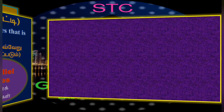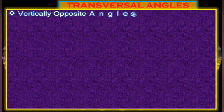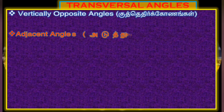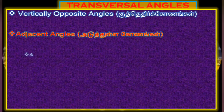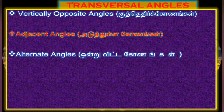The transversal intersects the parallel lines. We see vertical lines first — vertically opposite angles. That means the adjacent angles. Then alternate angles.